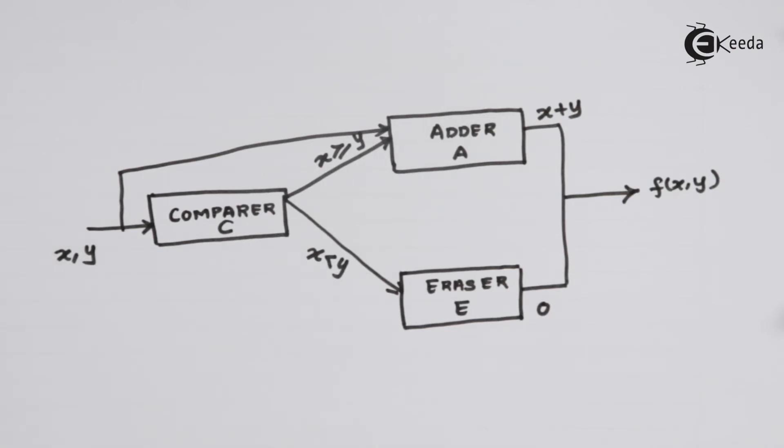I can say that the final function which is produced is f(x, y). If I put together this entire thing into one machine, that Turing machine would be a combination of these three Turing machines in a complicated manner.